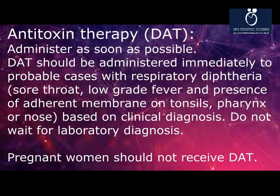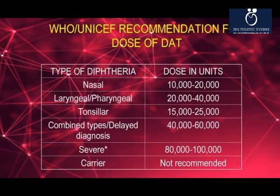Antitoxin therapy (DAT) should be administered as soon as possible to probable cases with respiratory diphtheria — sore throat, low-grade fever, and presence of an adherent membrane on tonsils, pharynx, or nose — based on clinical diagnosis; do not wait for laboratory confirmation. Pregnant women should not receive DAT. WHO-recommended DAT dosing: nasal diphtheria 10,000–20,000 units; laryngeal/pharyngeal diphtheria 20,000–40,000 units; tonsillar diphtheria 15,000–25,000 units; combined types 40,000–60,000 units; severe cases 80,000–100,000 units. Not recommended for carriers.